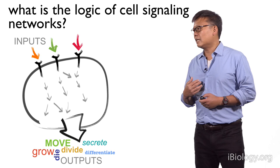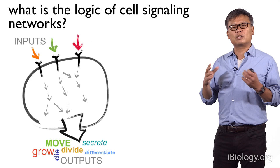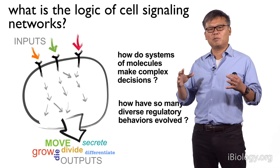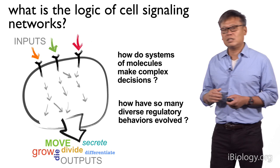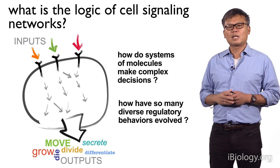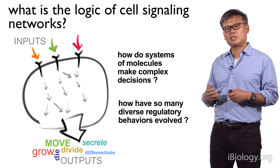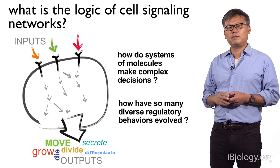What we're interested in is trying to understand how cells like this are able to read in many environmental inputs and then make these complex decisions about what they're going to do. What's particularly interesting for us is the idea that these decisions cells make are coordinated by networks made of molecules. We're interested in understanding how a system of molecules can work together to make these sorts of complex decisions, and how so many different regulatory behaviors have been able to evolve.